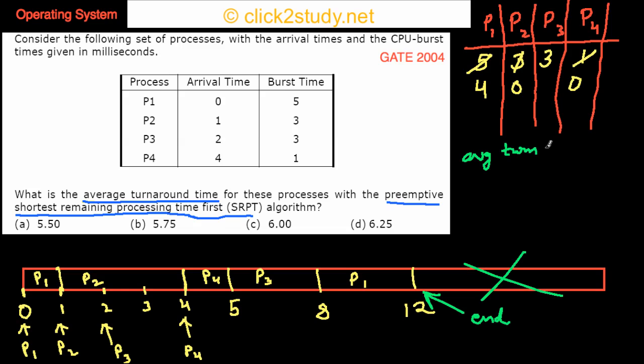Let's calculate average turnaround time. What is the turnaround time for P1? P1 arrived at 0 and it completed at 12, so turnaround time for P1 is 12. We take the average, it's average turnaround time. What is the turnaround time for P2? P2 arrives at 1 and it finishes at 4, that means the turnaround time for P2 is 4 minus 1, that is 3.